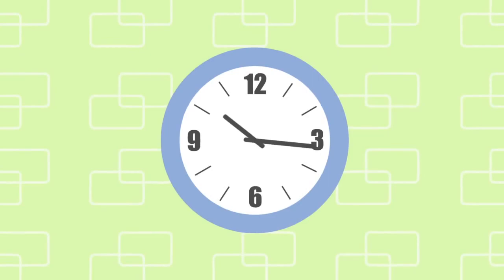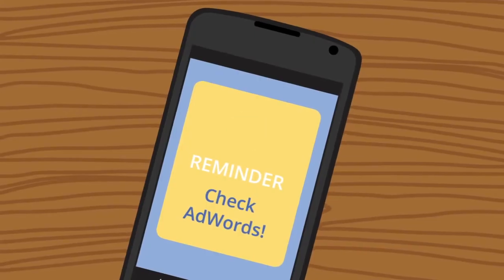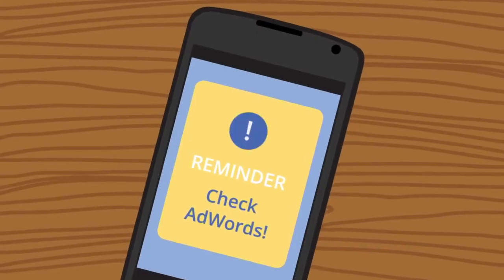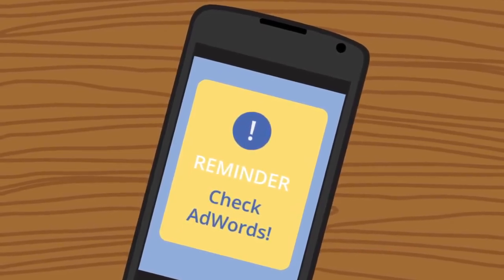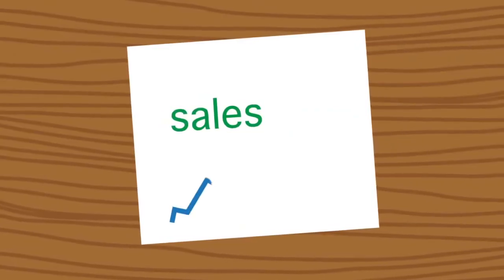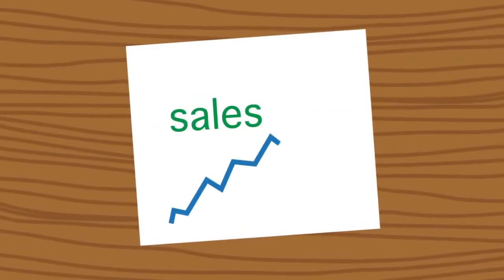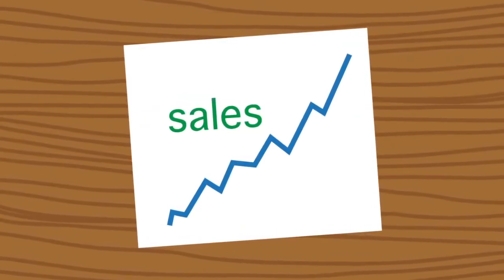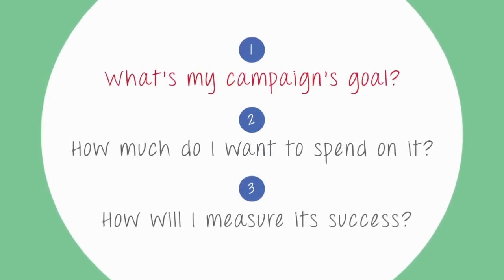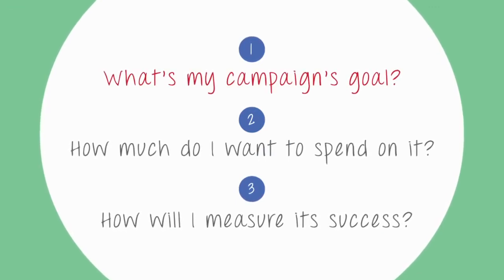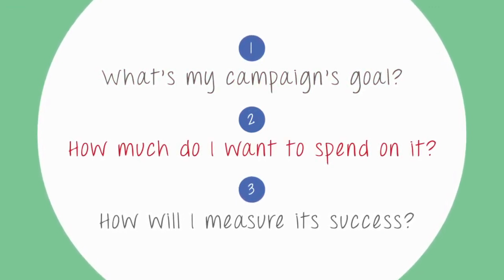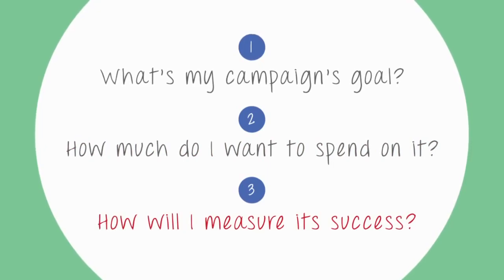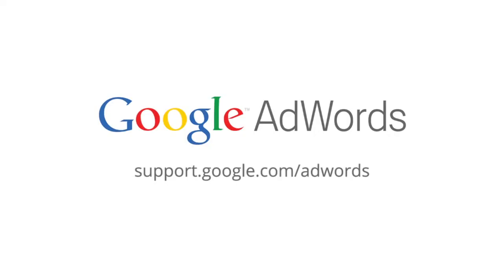Try setting aside 30 minutes each week to check your AdWords reports and make adjustments based on what's working. A small investment of time can make a big difference in your campaign's results. Planning your campaign is a great way to set yourself up for success and get the most out of your AdWords investment. For more ideas about how to make your business more successful with AdWords, visit the AdWords Help Center.